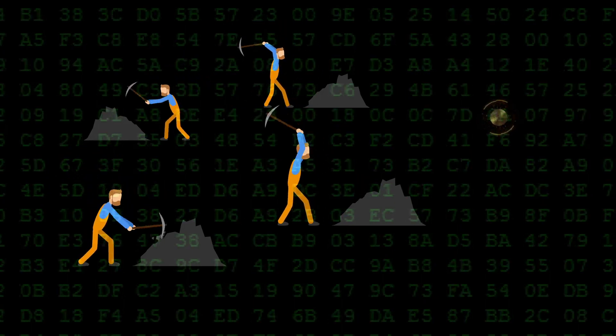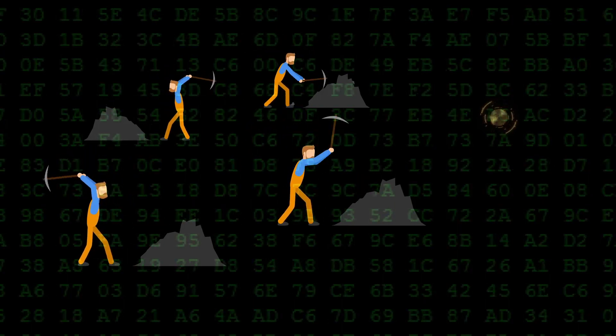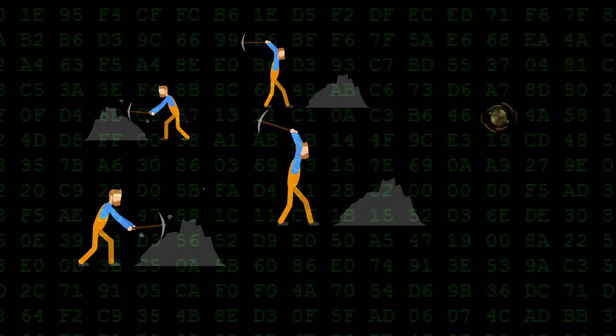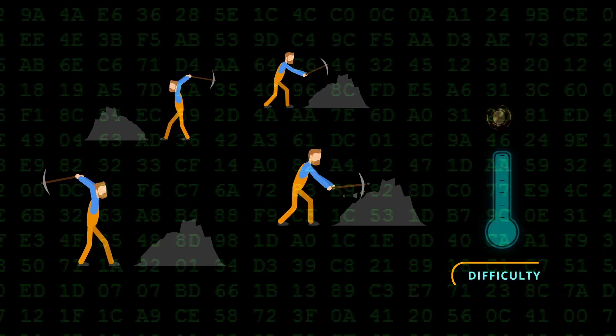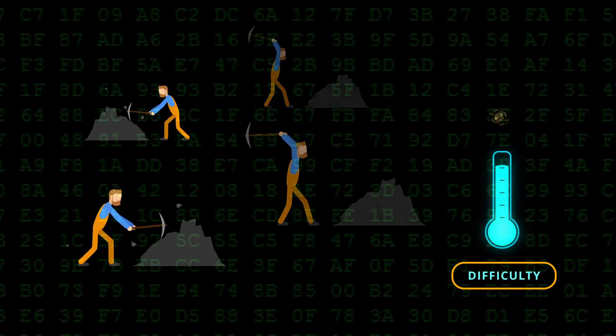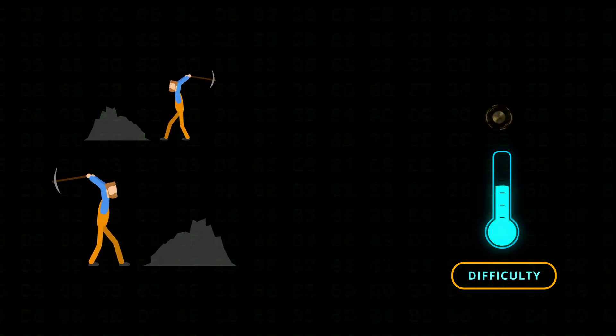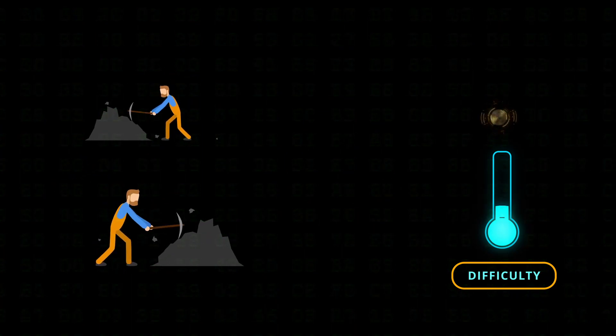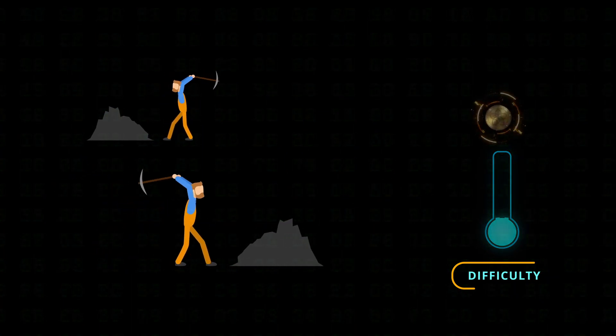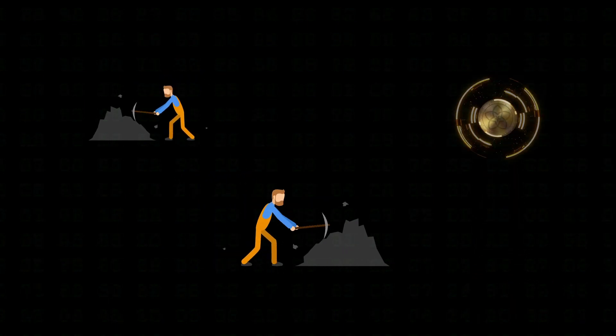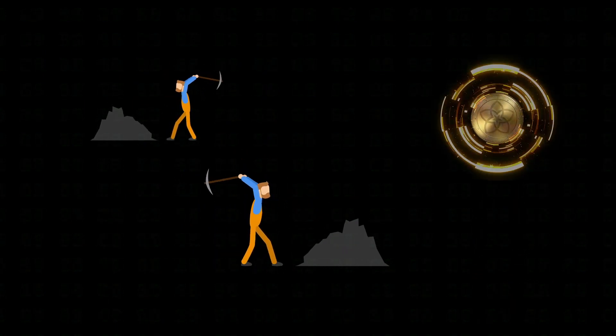On the other hand, if the price decreases, the profitability of mining decreases. And so, fewer miners mine the token. The hash rate decreases, causing the difficulty to decrease. And so, the cost of production decreases, increasing the profitability of mining.